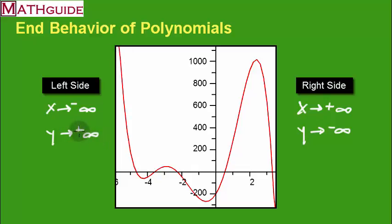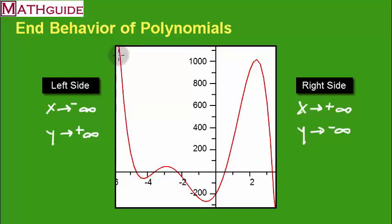So on the right side of the graph it was going down forever, and over here on the left side of the graph, it's going up forever. Let's go on to another example.